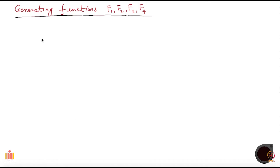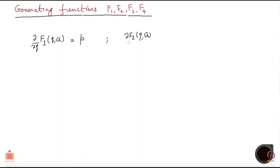If we take a generic function F1, which is a function of the old coordinate q and the new coordinate capital Q, then if I take the partial derivative I get small p. The small q's and small p's and capital Q's and capital P's are the set of coordinates and momenta. Small p, for example, is p1, p2, and so forth to pn. The second relation for F1 is: del F1(q, Q) over del capital Q equals minus the new momenta.